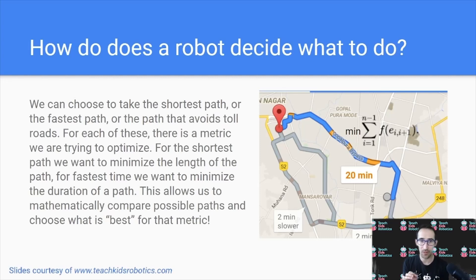For the shortest path, we want to minimize the length of the path. For the fastest time, we want to minimize the duration of a path. This allows us to mathematically compare best possible paths and choose what is best for that metric, whether it be distance, or time, or cost.